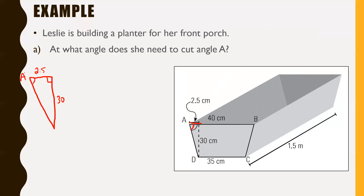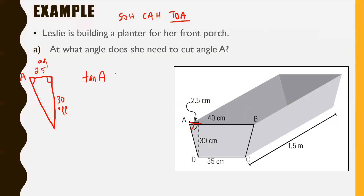Using trigonometry to find angle A: relative to angle A, 30 is the opposite side and 2.5 would be the adjacent side. We have opposite and adjacent. Thinking of SOH CAH TOA, since we're dealing with opposite and adjacent, we use tan. So tan of A equals the opposite side, 30, divided by the adjacent side, 2.5.